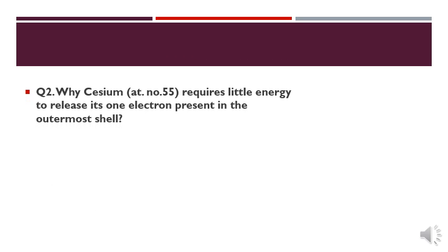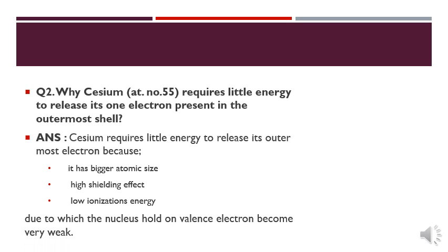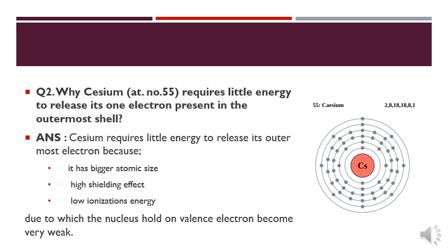Another short question: why does cesium, atomic number 55, require very little energy to release its outermost electron? Because it has bigger shells — its outermost electron is far from the nucleus. So with very little energy we can remove its outermost electron easily.